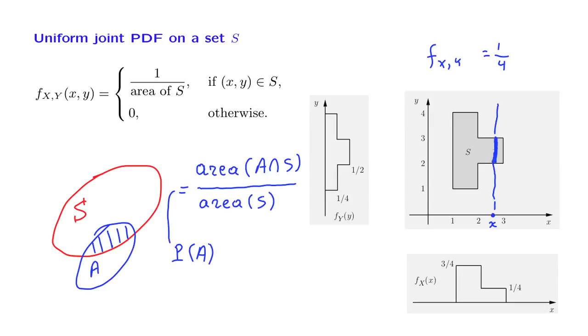But if X is somewhere around here, as we integrate over that line, we integrate a value of 1 fourth, the value of the PDF, over an interval that has a length equal to 3. And so the result turns out to be 3 fourths.